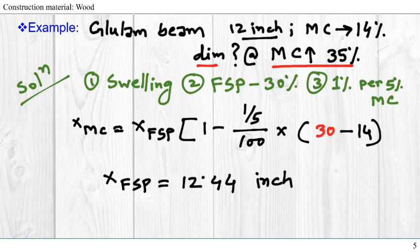To start the problem, first, we know the moisture content is increasing, so it will have swelling. Then, FSP is not given, so we assume 30%. And the change rate is not given, so we assume 1% change in dimension per 5% change in moisture content.